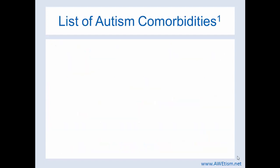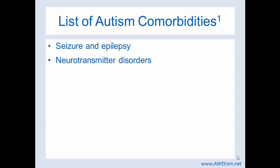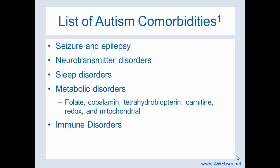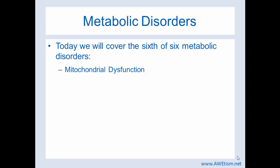Autism has many diseases that are comorbid, so it's really important to separate the two and start healing them all. Here's a list of autism comorbidities: seizure and epilepsy, neurotransmitter disorders, sleep disorders, metabolic disorders — there are six of them — immune disorders, and gastrointestinal disorders. Today we're going to do a deep dive on metabolic disorders, and we're going to look at the sixth of six metabolic disorders, and that is mitochondrial dysfunction.